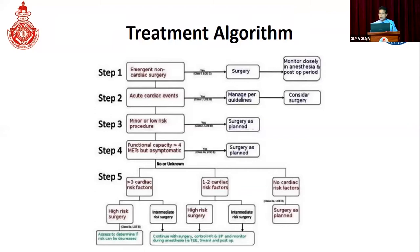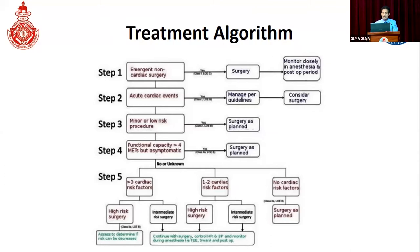Initial steps are easy — within a few minutes of evaluation we can decide. However, the problem arises if functional capacity is also poor, they are going for elective surgery, and have several risk factors. If they have more than three risk factors and are going for high-risk or intermediate-risk surgery, we need to evaluate further. These patients in step five of the decision diagram are the ones who need real preoperative risk assessment with further investigations.